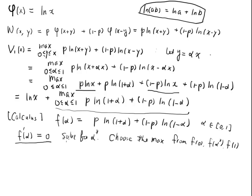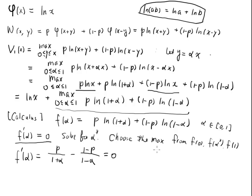Taking the derivative with respect to α: for p·log(1 + α), the derivative is p/(1 + α). For (1 - p)·log(1 - α), by the chain rule the derivative of the inside is -1, giving -(1 - p)/(1 - α). We set this equal to 0, then move one term to each side.